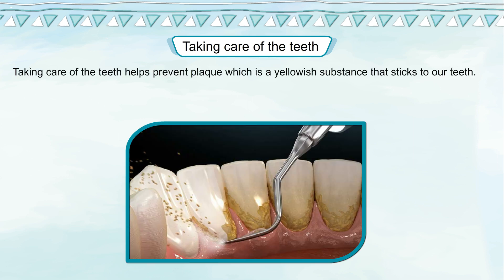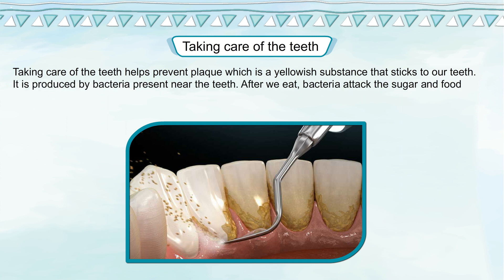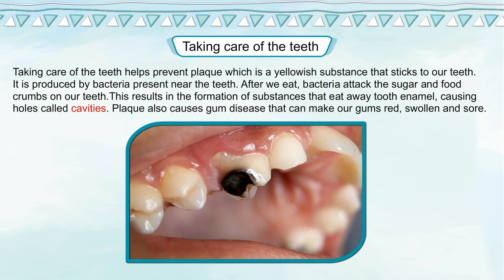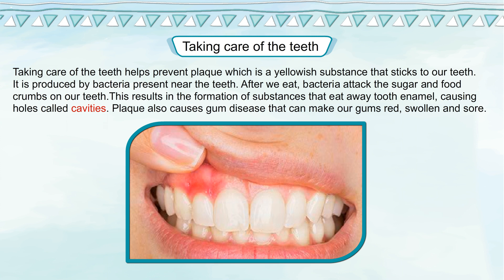Taking care of the teeth helps prevent plaque, which is a yellowish substance that sticks to our teeth. It is produced by bacteria present near the teeth. After we eat, bacteria attack the sugar and food crumbs on our teeth, resulting in the formation of substances that eat away tooth enamel, causing holes called cavities. Plaque also causes gum disease that can make our gums red, swollen, and sore.